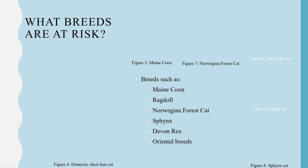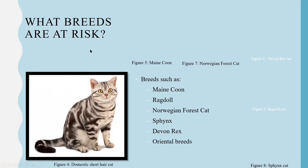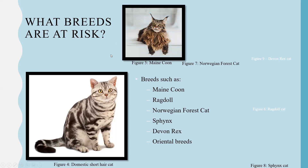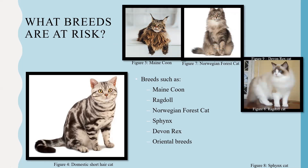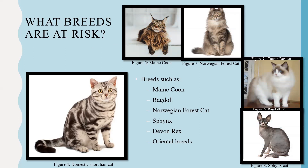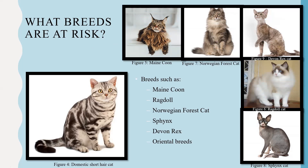The breeds at risk include the domestic shorthair cat, which, due to its multi-breed background, can carry any one of these genetic backgrounds. Other predisposed breeds are Maine Coons, Ragdoll cats, Norwegian Forest cats, Sphinx cats, and Devon Rex cats. Oriental breeds such as Himalayans, Burmese, and Persians have also been known to have some predisposition.